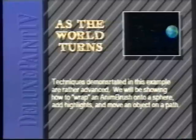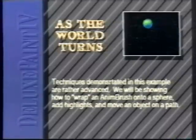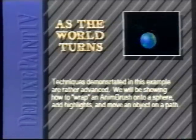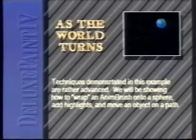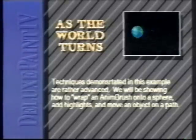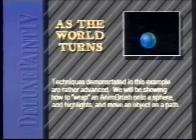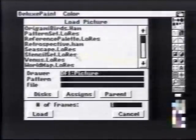Techniques demonstrated in this next example are rather advanced. We will be showing how to wrap an anim brush onto a sphere, add highlights, and move an object on a path. We will be using low resolution, 32 color. First, load the image that came with Deluxe Paint called World Map.